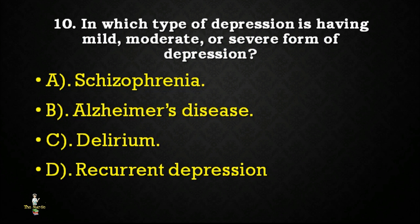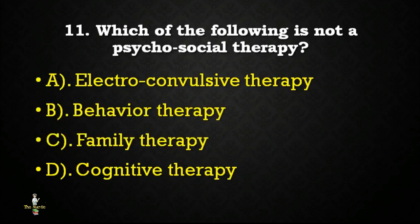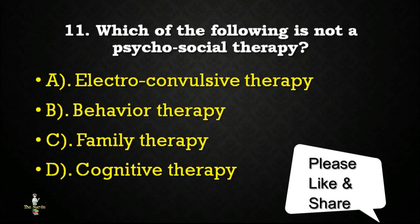Next question: in which type of depression does the patient have mild, moderate, or severe forms? Options: schizophrenia, Alzheimer's disease, delirium, or recurrent depression? Correct answer is recurrent depression. Next question: which of the following is NOT a psychosocial therapy — electroconvulsive therapy, behavior therapy, family therapy, or cognitive therapy? Correct answer is electroconvulsive therapy.